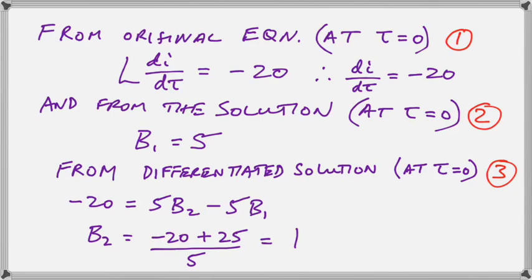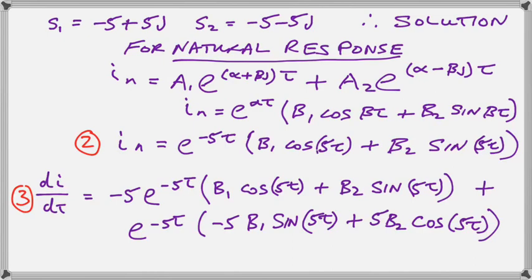So where did the 5B2 and 5B1 come from? Well, let's go back here and have a look. Look at our differentiated solution, and remember that we're still dealing with t equals zero. So the sine terms are going to disappear at t equals zero. The cosine terms are going to be one, and the sine terms are going to be zero, and of course the exponential terms are going to be one as well at t equals zero, so we are going to have minus 5B1 plus 5B2.